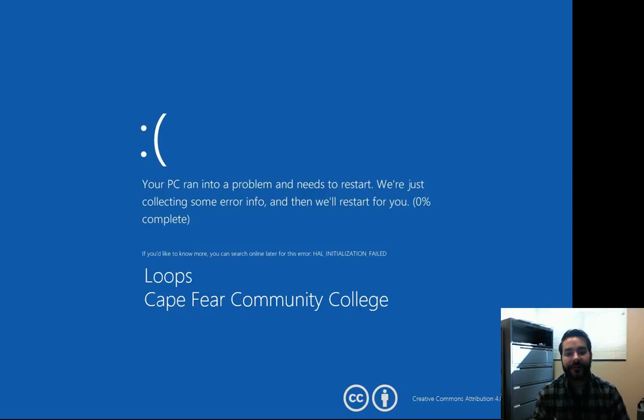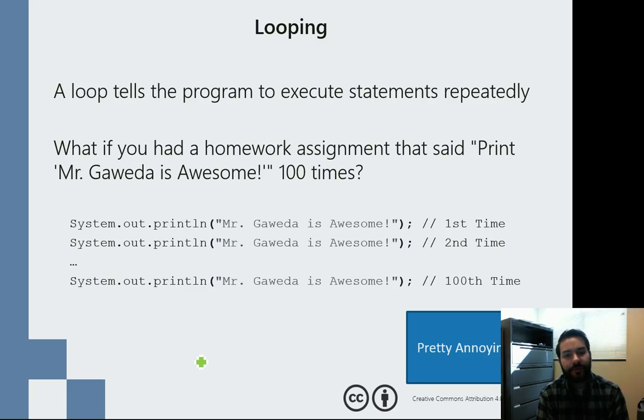So now we look into the next control flow mechanism in programming, and this is known as loops. The idea behind a loop is, let's say for example, I decided to be just a terrible instructor and I told you your homework assignment was to print Mr. Gaweda is awesome 100 times.